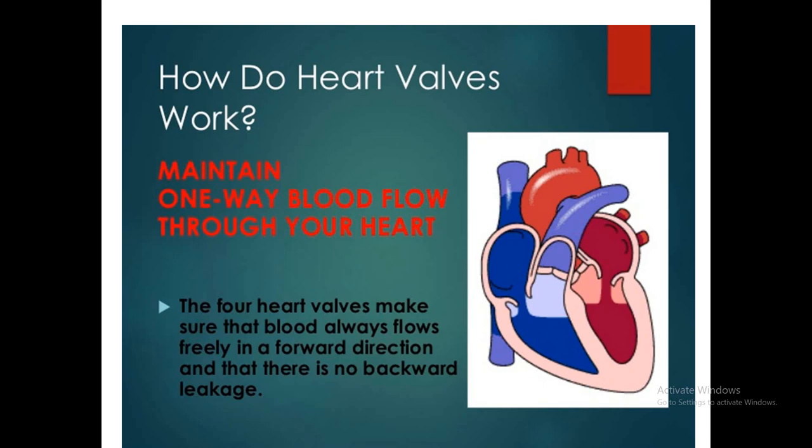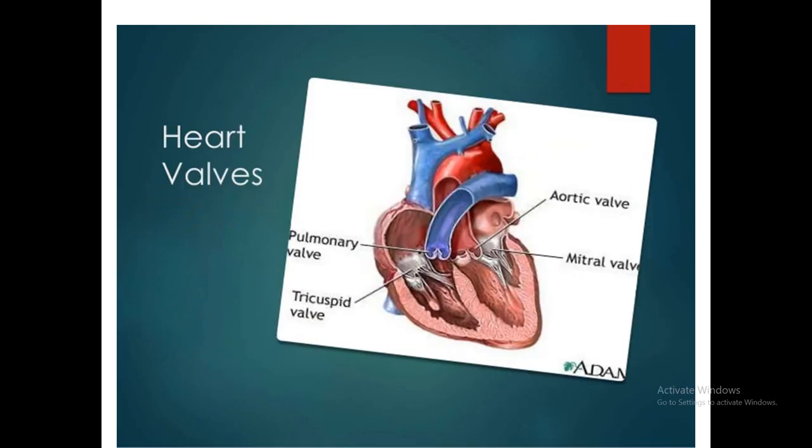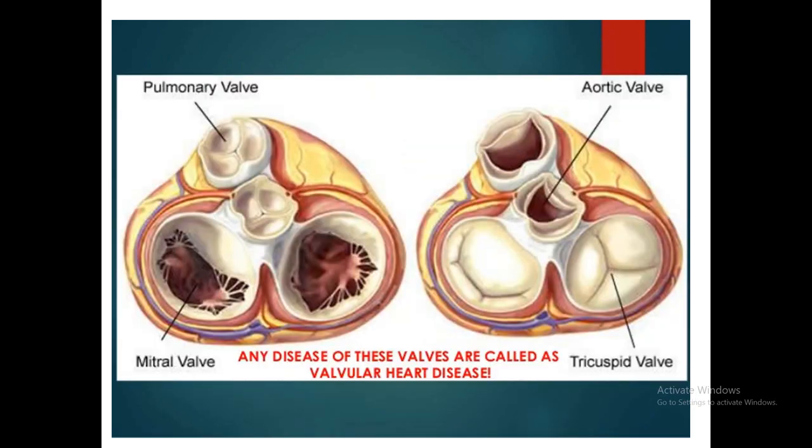The proper function at the time of systole and diastole will be gone, and disease occurs in the person. These are the four heart valves. Remember: the mitral valve and tricuspid valve have flappy-type valves — the mitral has two flaps and the tricuspid has three flaps. But pulmonary and aortic valves are disc-type valves.